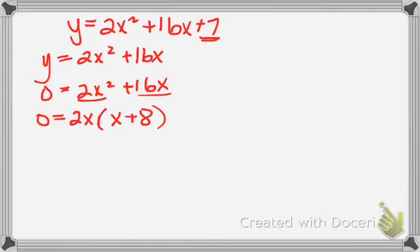Now we're going to go and we're going to try and solve this expression. So either 2x is equal to 0 or x plus 8 is equal to 0. And for this to be true, x must be equal to 0 or negative 8.